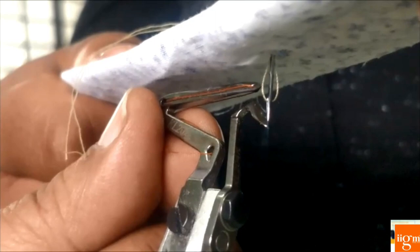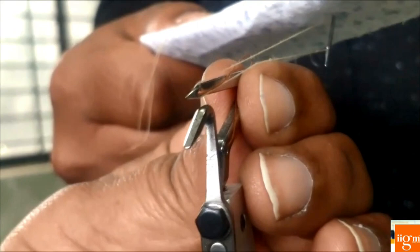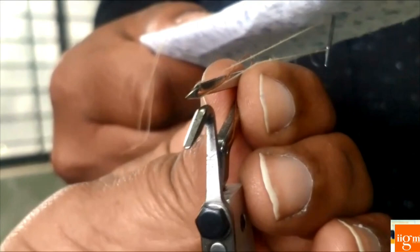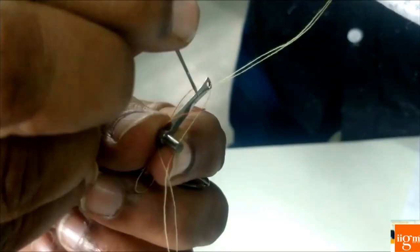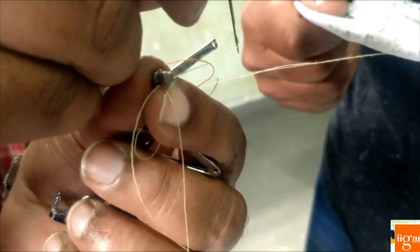This is the way how we have to adjust and again next, inside this lower looper thread, upper looper should catch the thread. This is the lower looper thread and this is the upper looper here so that this makes the loop formation as well as overlock stitches formation.